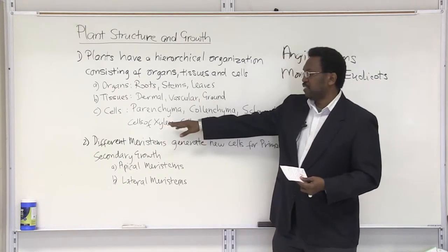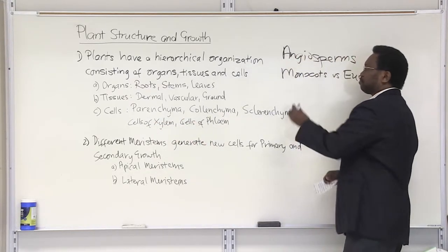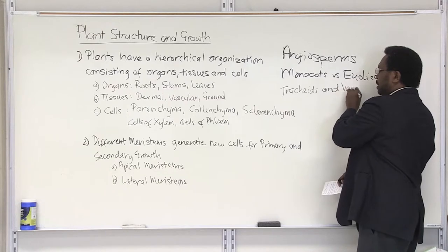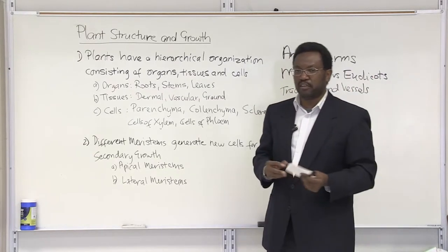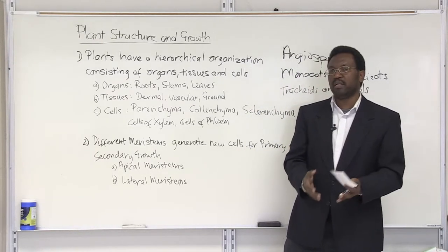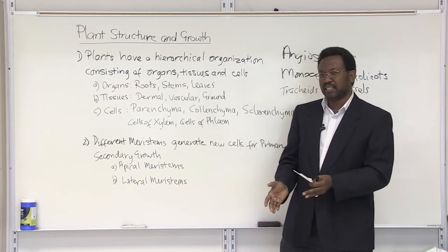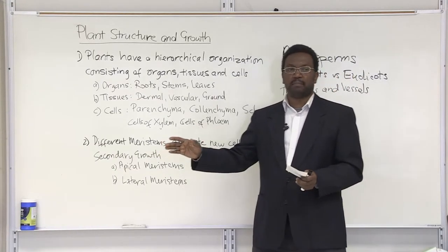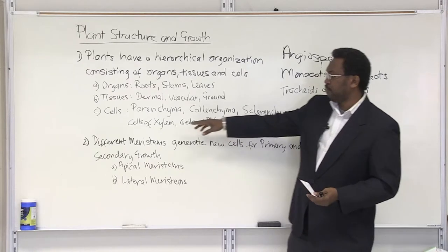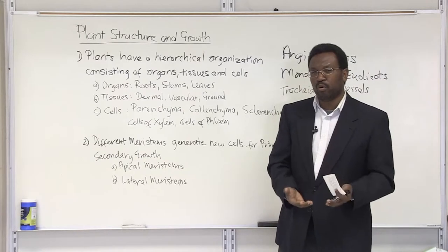Then we have a type of cells known as xylem vessels, containing two types of cells: tracheids and vessel elements. The xylem vessels are responsible for transporting water and minerals in the plants — absorbing water and minerals out of the soil, directing them into the xylem vessels, and transporting them up the plant, predominantly to the leaf area where photosynthesis takes place.